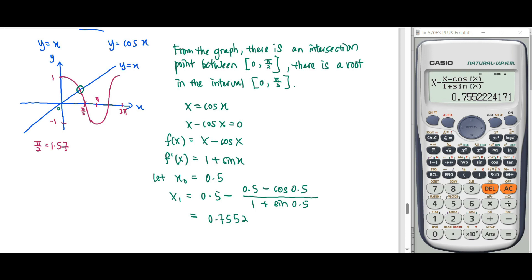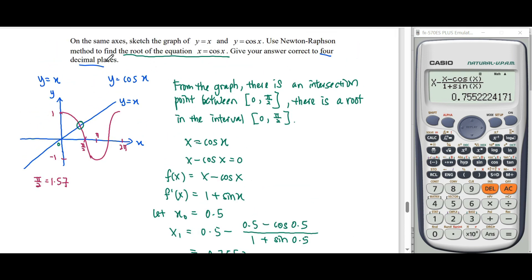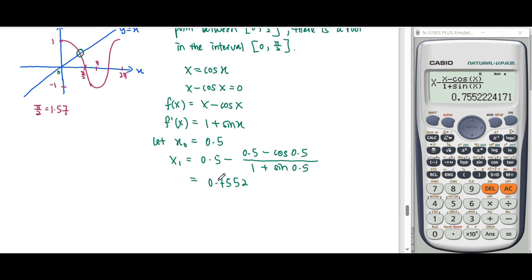What we need here is 4 decimal places at the end of the answer. So in calculation we add once or twice more. Then we repeat the procedure here.